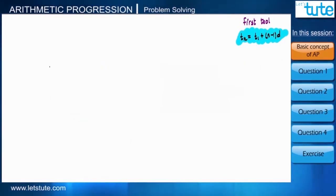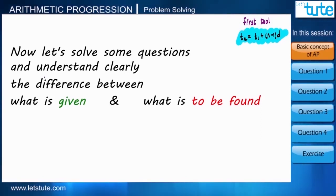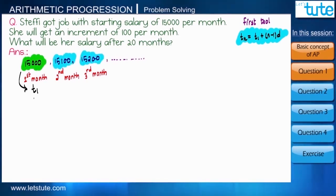So now we know what exactly these parameters represent or denote, but many a times we find it difficult to identify what is given and what exactly we need to find. So let us learn how to go about it. Here is a situation: Stephi's salary in the first month is 15,000, and every month she gets an increment of 100. So if the increment is 100, in the next month she will get 15,100, then 15,200, and so on.